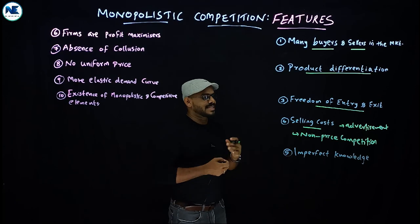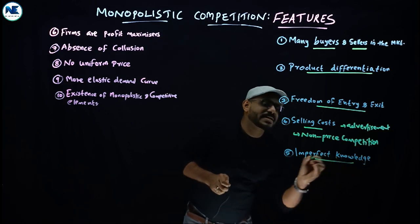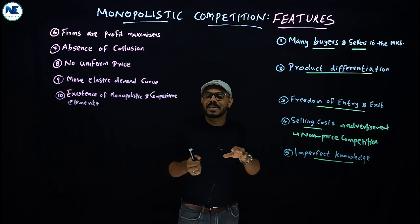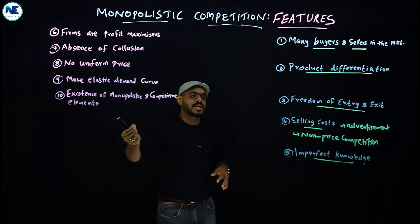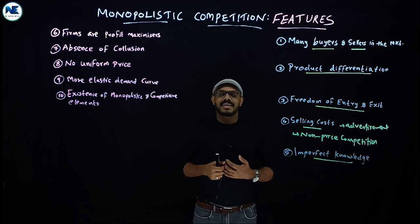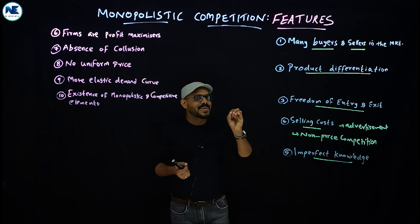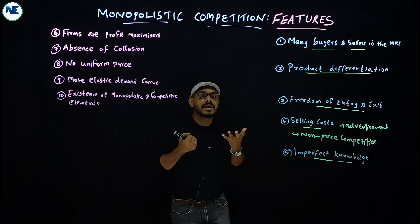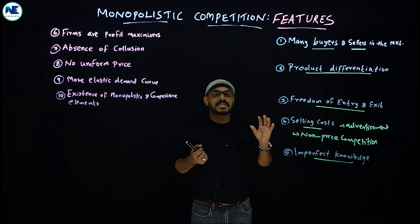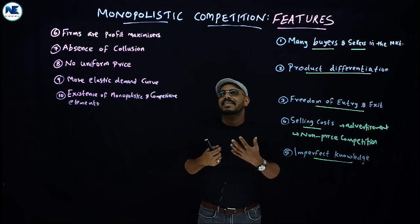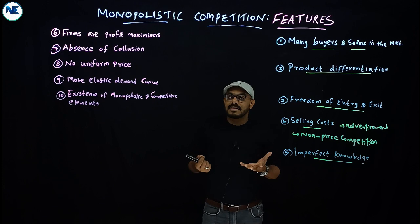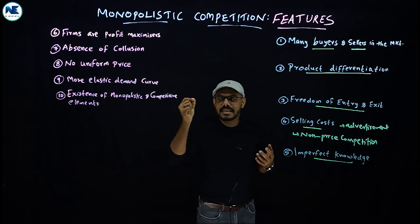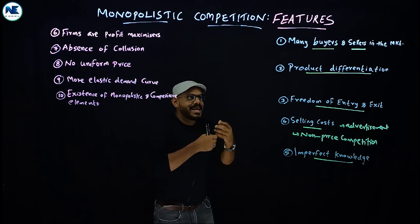The sixth point is imperfect knowledge. In perfect competition, we have perfect knowledge — homogeneous products and homogeneous prices. But in monopolistic competition, there is an absence of perfect knowledge. Buyers may not know which product gives the best value or which seller offers the lowest price. A hundred percent profit maximization is therefore not always achievable.